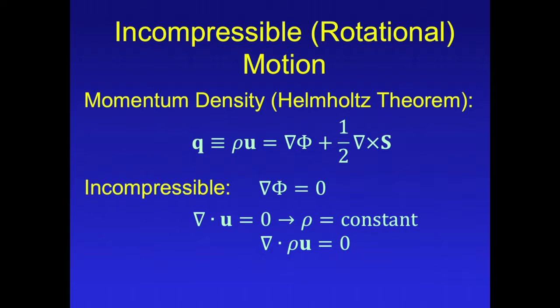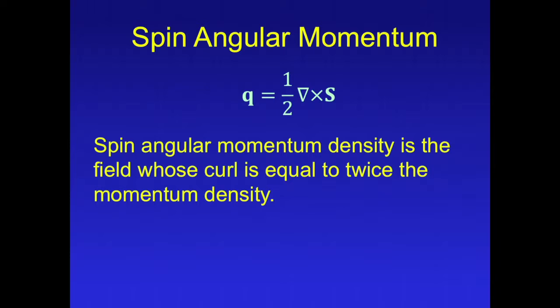According to the Helmholtz theorem, any momentum density can be described as a gradient plus a curl. For incompressible motion, the gradient term is zero. Spin angular momentum density is the field whose curl is equal to twice the momentum density for incompressible motion.